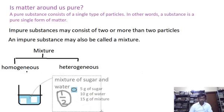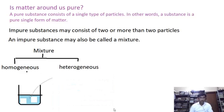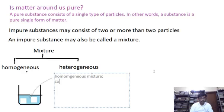So what is a homogeneous mixture? A homogeneous mixture contains constituents in the same ratio throughout the volume of the mixture.